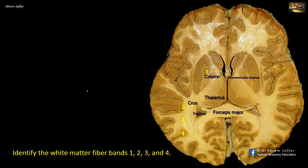The white matter in 4 represents the fibers of the optic radiation, also known as the geniculocalcarine tract. This is a collection of axons projecting from the relay nucleus in the thalamus, the lateral geniculate body, and carry visual information to the occipital lobe along the calcarine sulcus.